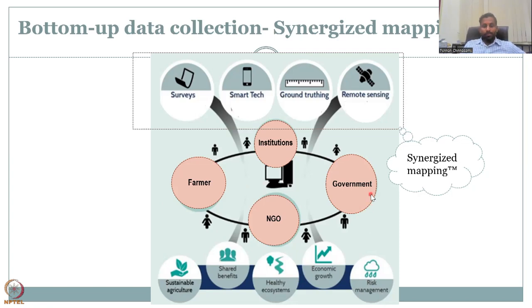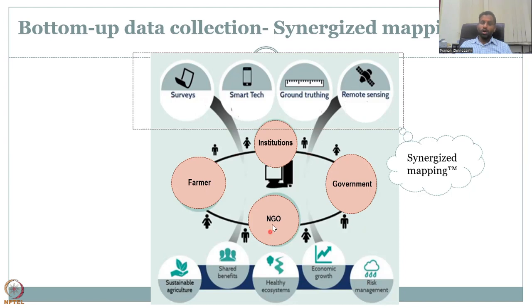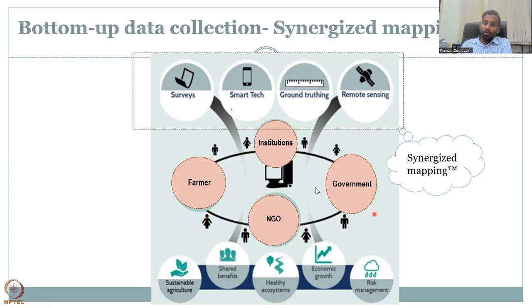Government always collects data through surveys and some measurements. Institutions and NGOs, slightly more advanced in technology — such as academic institutions like IIT Bombay — can do data capturing and analysis using remote sensing products and GIS platforms. Farmers themselves can provide data back to the system using smart tech like mobile phones, SMS, or WhatsApp messages, reporting water levels or what crops they are growing.